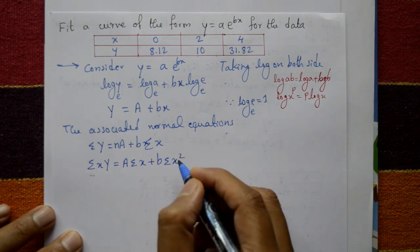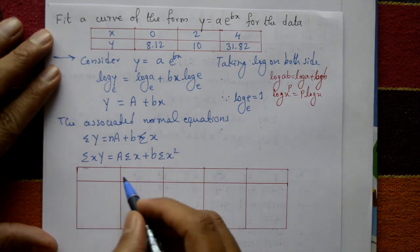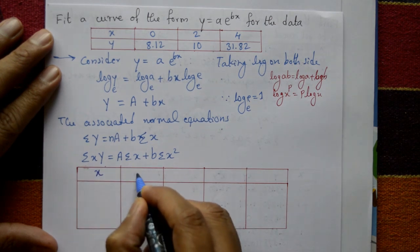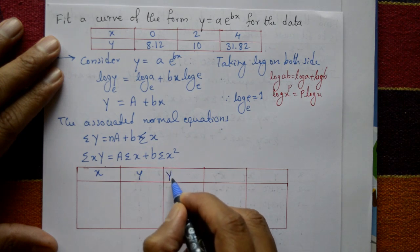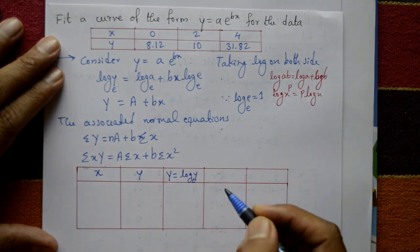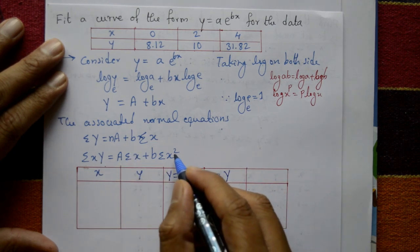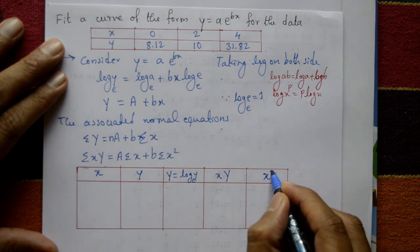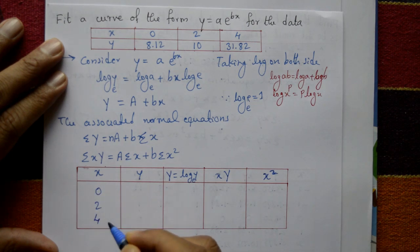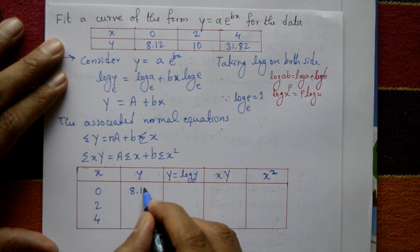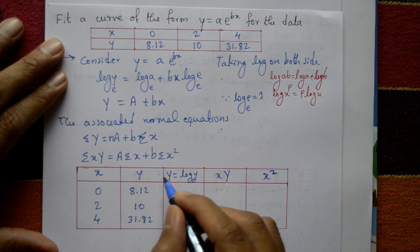Now construct a table with columns: small x, small y, capital Y (where Y = log y base e), x·Y, and x². Write the x values: 0, 2, 4, and small y values: 8.12, 10, 31.82.